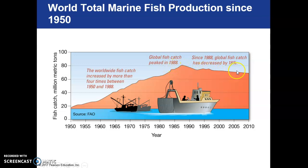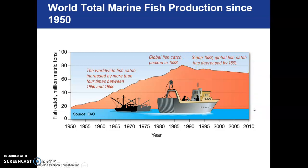Since then, we've decreased our global catch by about 18%, largely achieved by North America and some island nations doing a good job with fisheries management — though the catch is still pretty high. Most countries in the world are still fishing because the fish are still there and they need to feed their people, and it has been very difficult to reach a worldwide consensus about what should happen.